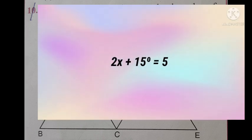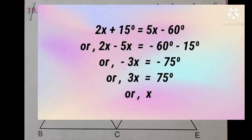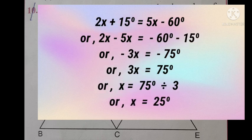So, 2x minus 5x is equal to minus 60 degrees minus 15 degrees. So, minus 3x equal to minus 75 degrees. So, 3x equal to 75 degrees, and x equal to 75 degrees divided by 3. So, x equal to 25 degrees.